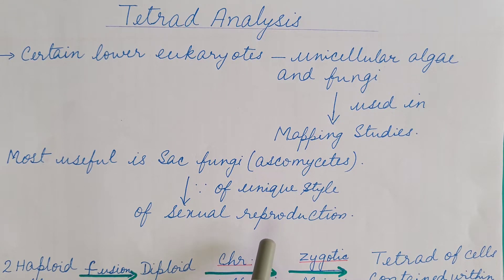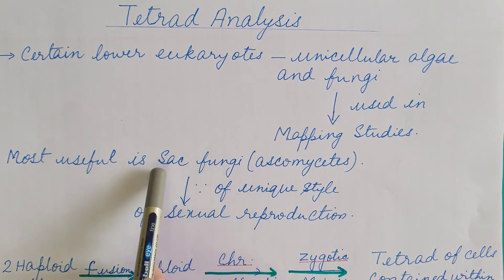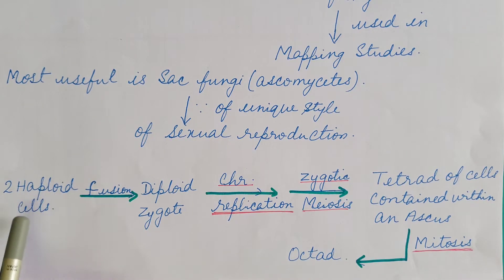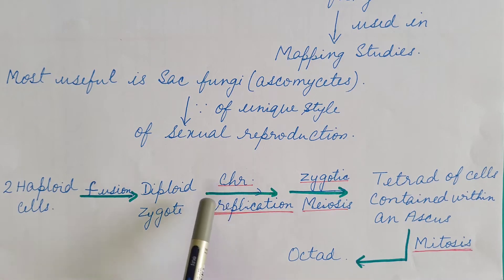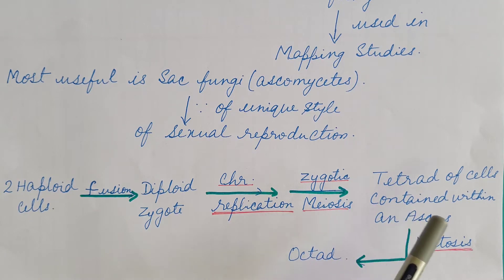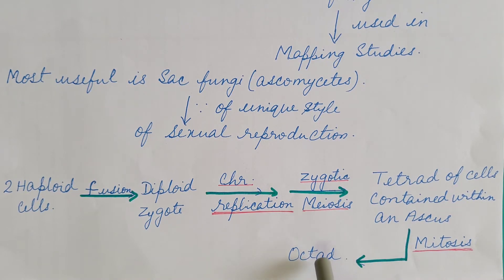Fungi may be multicellular or unicellular and their cells are haploid, meaning they have only one set of chromosomes, and these reproduce asexually. But they may also reproduce sexually, as in sac fungi or ascomycetes. Two haploid cells fuse and produce a diploid zygote. Then chromosomal replication takes place, followed by zygotic meiosis — both meiosis I and meiosis II — and four haploid cells are produced, known as spores or tetrad. These four haploid cells then undergo mitosis and produce eight haploid cells known as octad. Both the tetrad and octad are contained within a sac-like structure known as ascus.